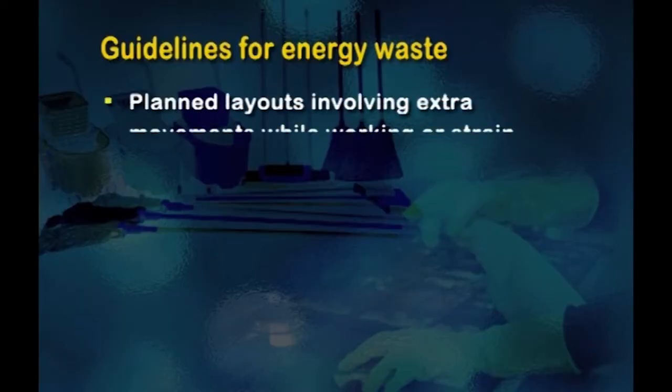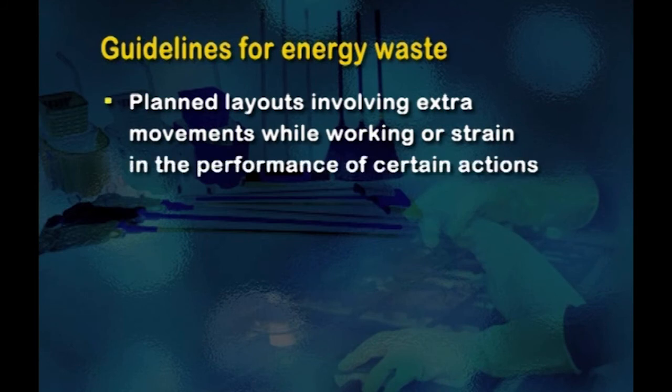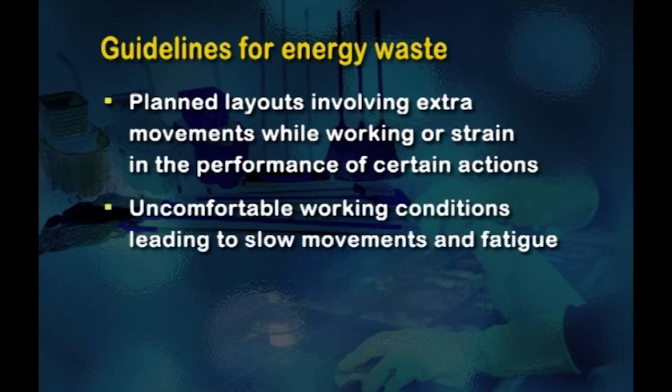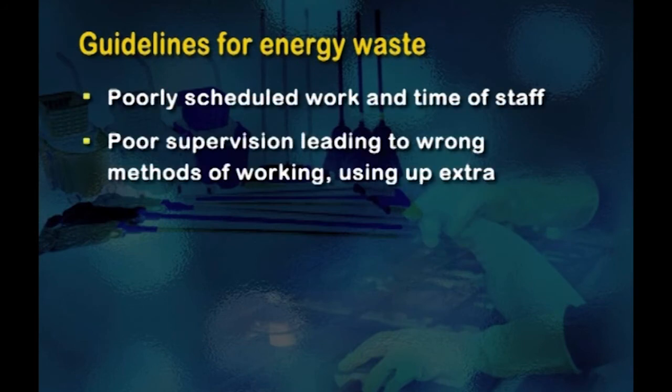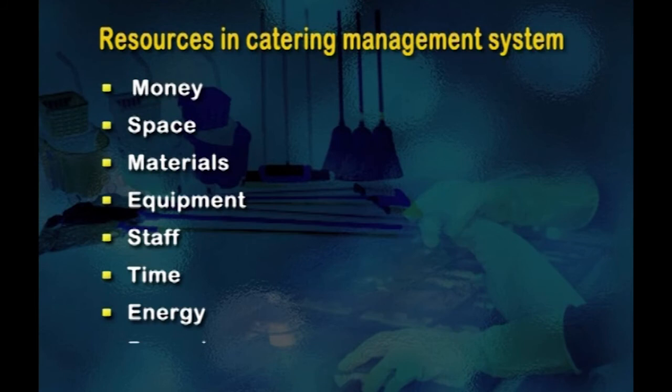A look into the areas where human effort may be wasted is worthwhile, even though work of people cannot be as closely and objectively monitored as physical structures. A brief resume of factors which may affect the amount of energy people waste at work will help as guidelines for necessary action in programs involving its conservation. These factors include: planning layouts involving extra movements while working or strain in the performance of certain actions; uncomfortable working conditions leading to slow movements and fatigue; poorly scheduled work and time of the staff; and poor supervision leading to wrong methods of working, using up extra effort and time.